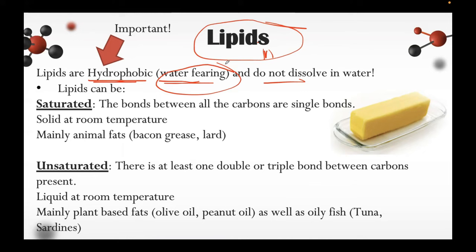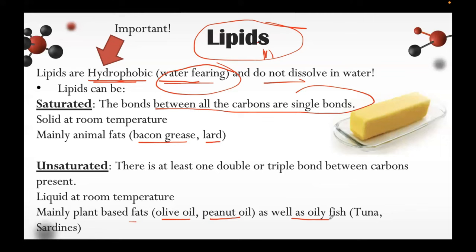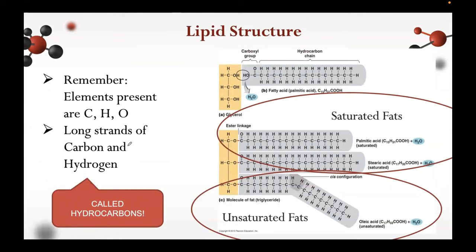Two examples of lipids include saturated and unsaturated. Saturated lipids have single bonds between all carbons, are solid at room temperature, and mainly come from animal fats such as bacon grease and lard. Unsaturated lipids have at least one double or triple bond between carbons, are liquid at room temperature, and are mainly plant-based fats, including olive oil, peanut oil, and oily fish like tuna and sardines (omega-3). Unsaturated fats are healthier compared to saturated fats. Remember: lipids are hydrophobic and insoluble in water, and the long strands of carbon and hydrogen are called hydrocarbons.